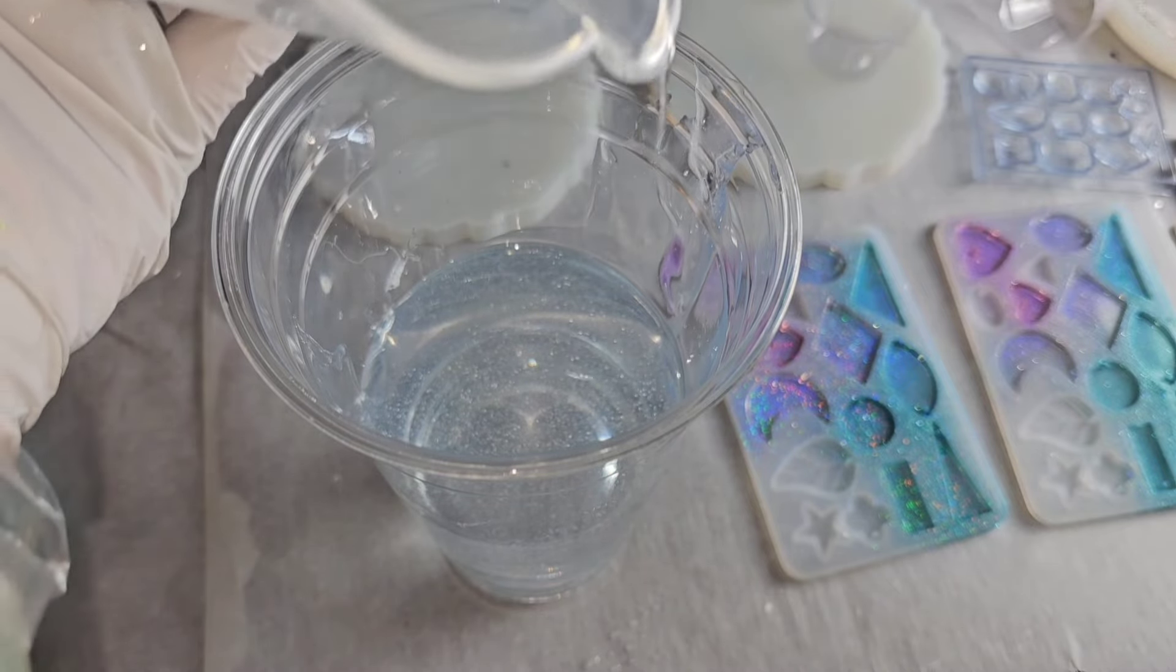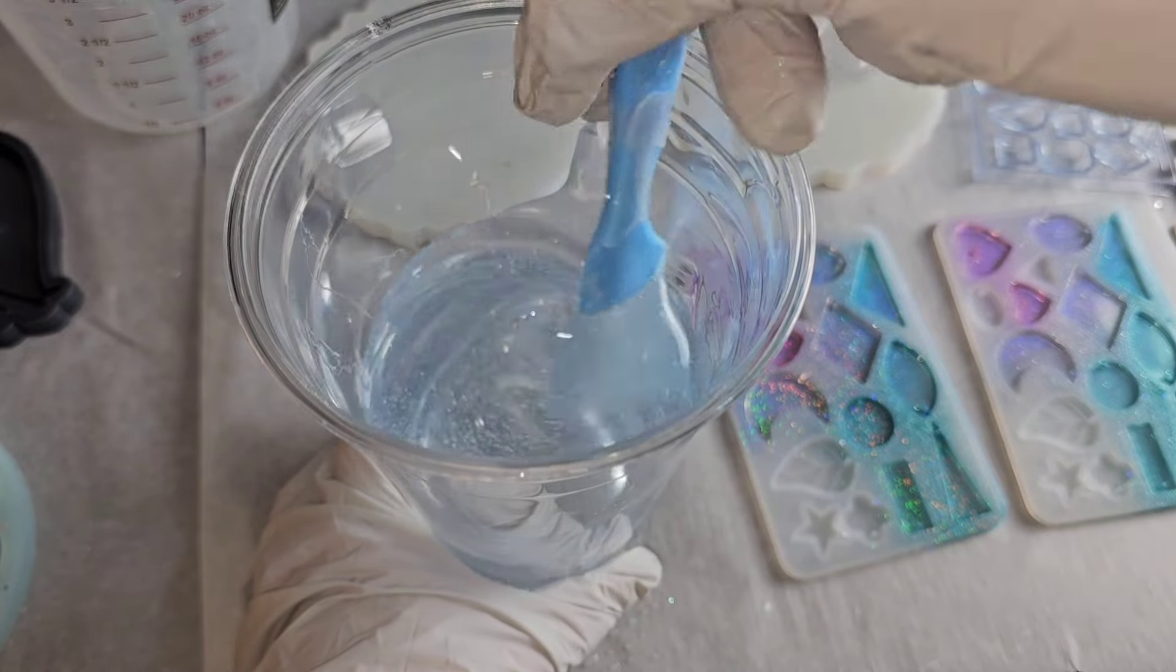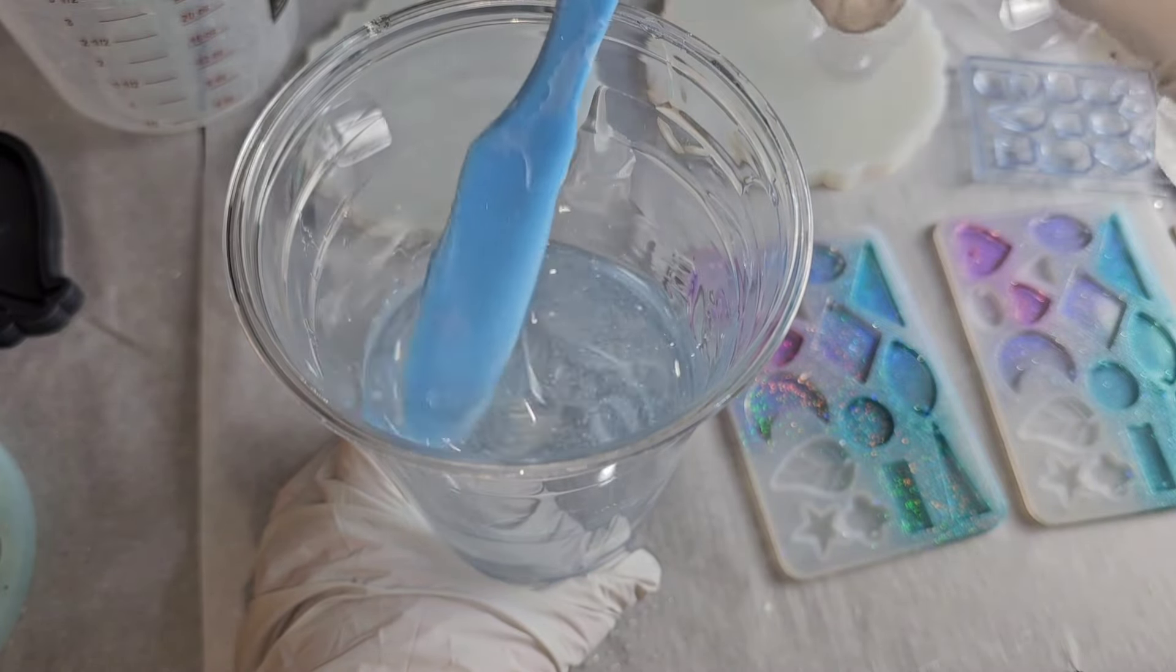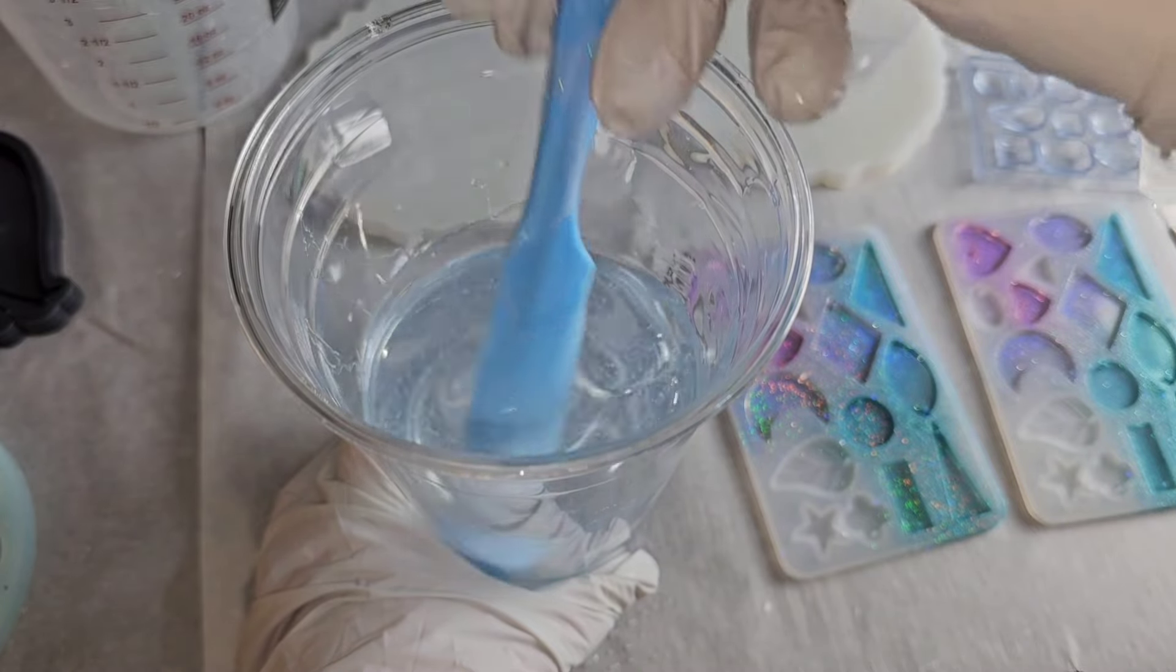Just making sure you get every single bit out of that cup and we're going to mix for another three minutes. This is called the double cup mixing technique, and this ensures your epoxy is 100 percent mixed.